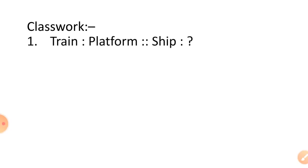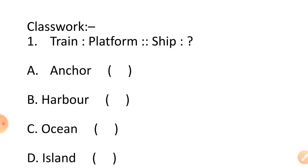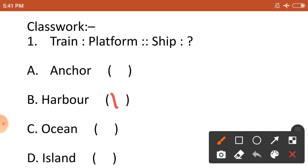Question 3 is classwork. Question 1: train is related to platform, so ship is related to — option A anchor, option B harbor, option C ocean, and option D island. The halt of a train is called a platform. In the same way, the halt of a ship is called a harbor. So the correct option is option B, harbor.